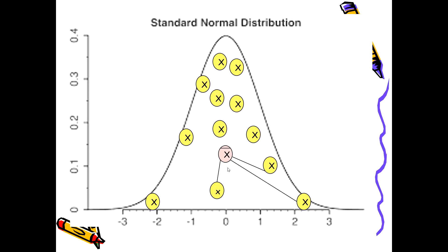After calculating the standard deviation — represented as plus/minus 1, plus/minus 2, and plus/minus 3 — we want to know how each value differs from the mean in terms of standard deviations. How much does this value differ from the mean? This difference in terms of standard deviations is calculated by the Z-score.